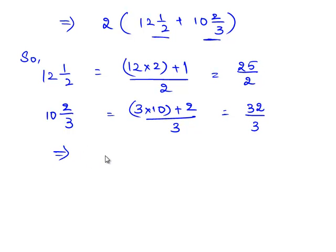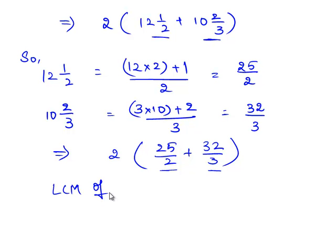Now we shall add 2 times (25/2 + 32/3). Since we need to add two fractions with different denominators, we shall obtain a common denominator. A common denominator is obtained by taking LCM of the denominators 2 and 3. Since 2 and 3 are prime numbers, LCM of 2 and 3 is equal to 2 × 3, which is equal to 6.